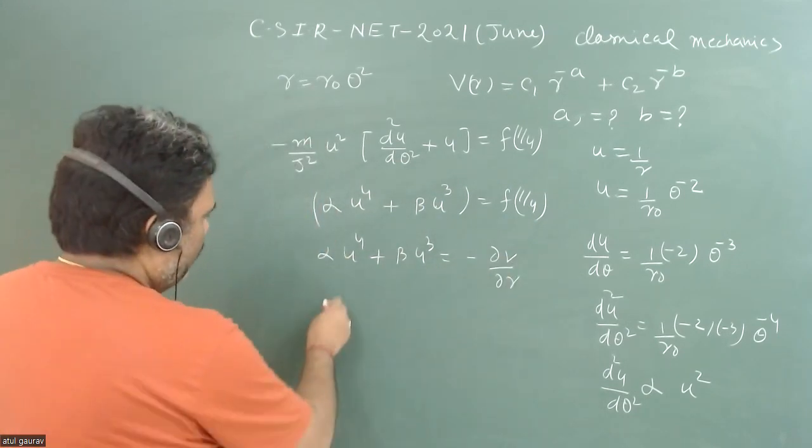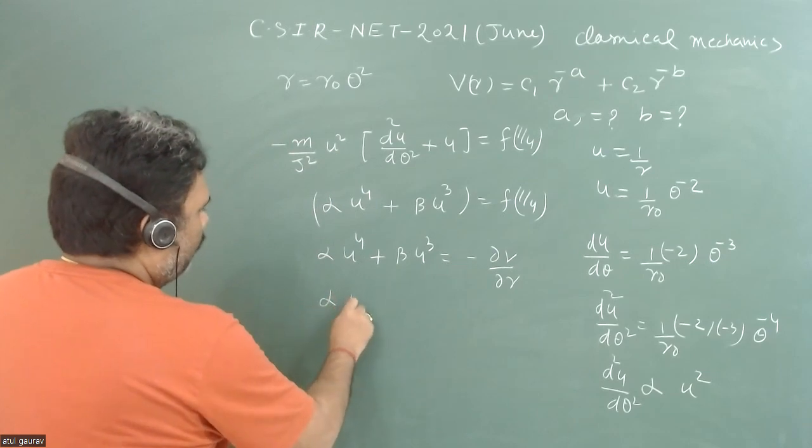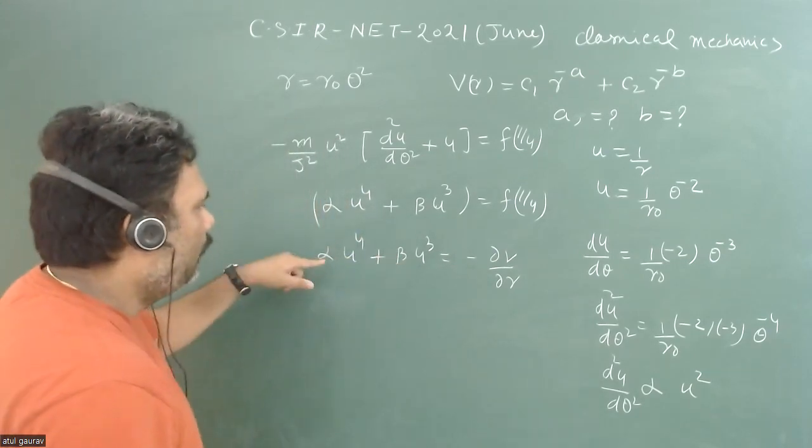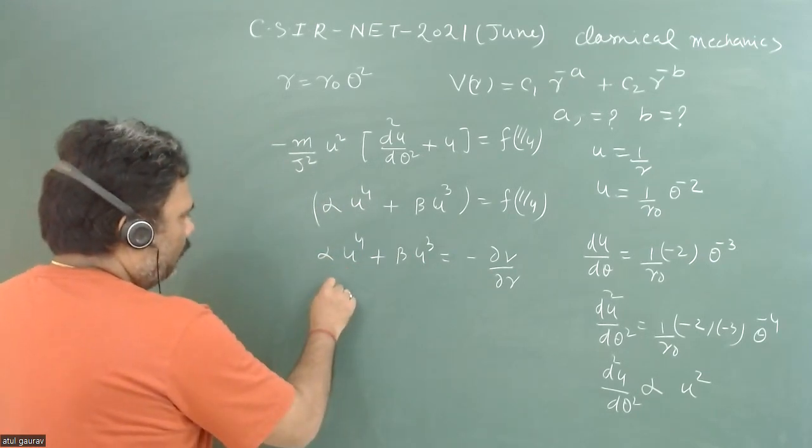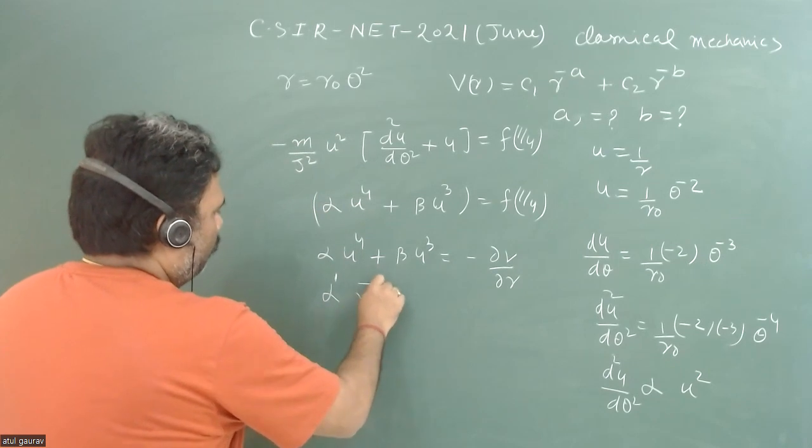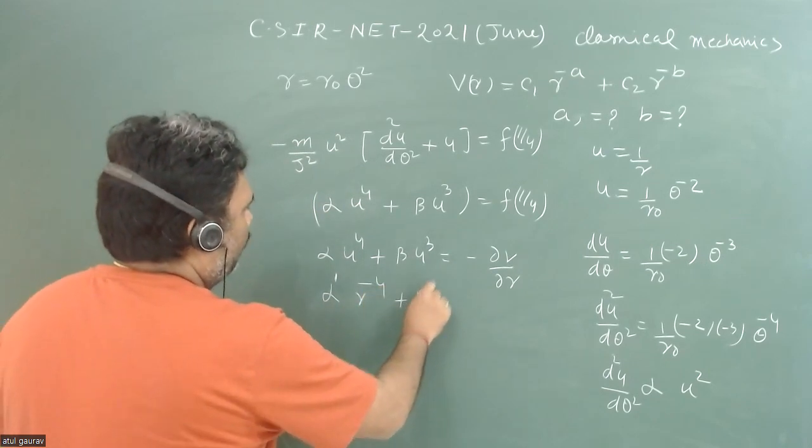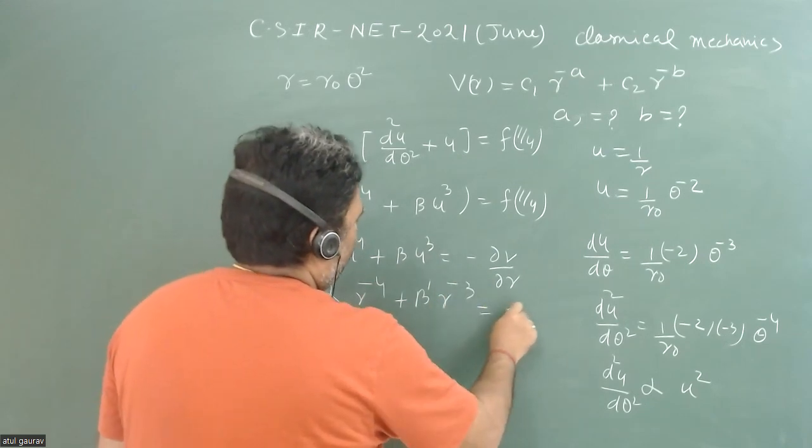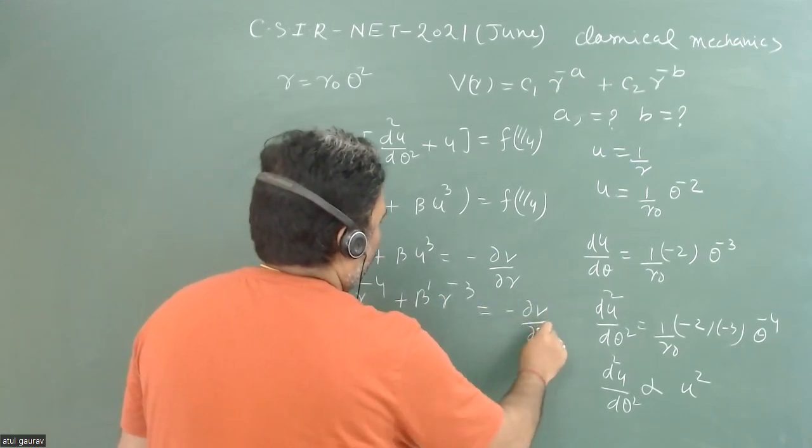Then we can easily have, and then we have to write this thing in form of r. So we can write alpha dash r to the power minus 4 plus beta dash r to the power minus 3 is equal to minus del v upon del r.